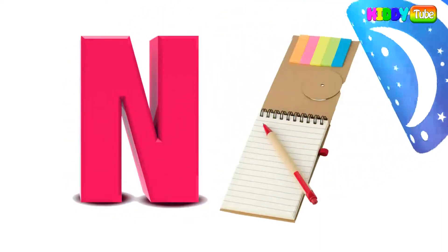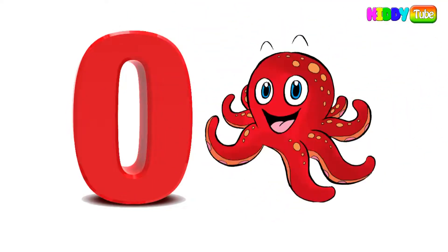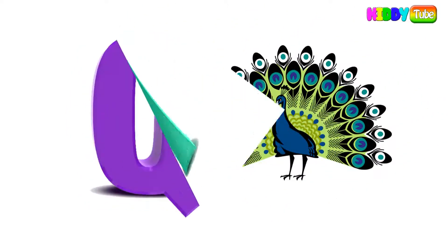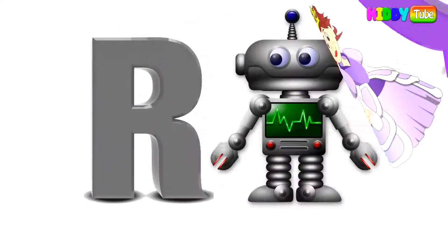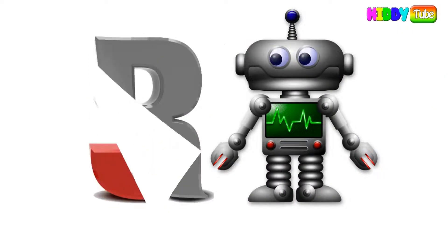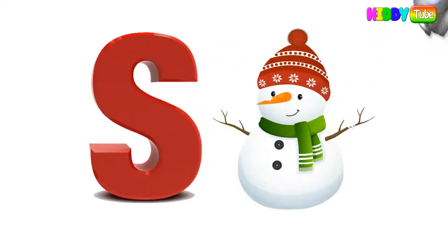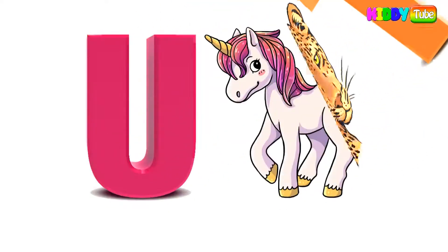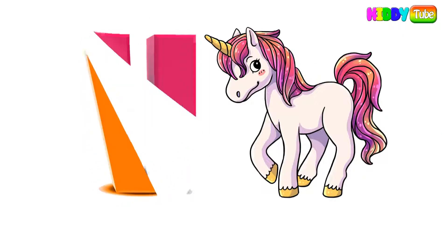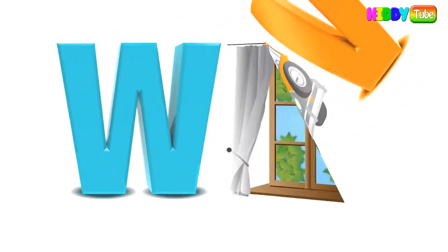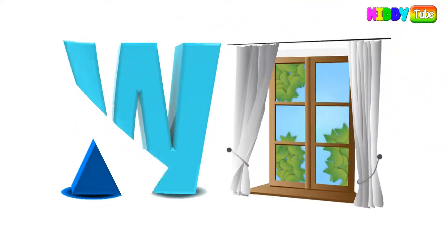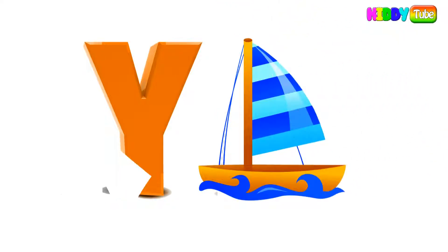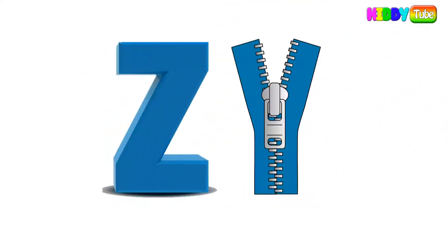N for notebook, O for octopus, P for peacock, Q for queen, R for robot, S for snowman, T for tiger, U for unicorn, V for van, W for window, X for x-ray, Y for yacht, Z for zipper.